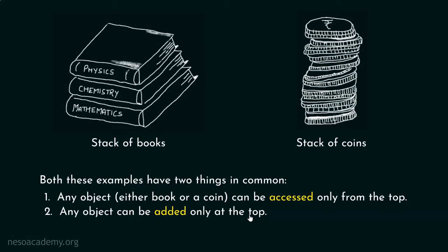Now, you might ask this question: is it possible to access the chemistry book before accessing the physics book? Obviously, you might argue that you can access the chemistry book before the physics book, or access the mathematics book before these two. It might also be possible to access a particular coin before another, or add a new coin in between. This is possible.